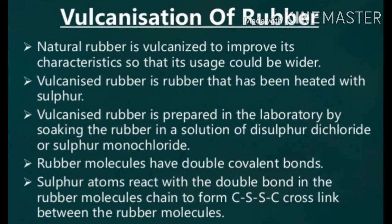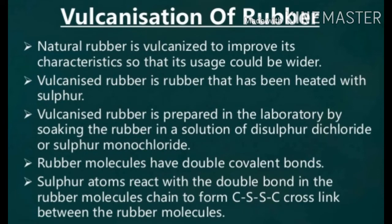Vulcanized rubber is rubber that has been heated with sulfur. Vulcanized rubber is prepared in the laboratory by soaking the rubber in a solution of disulfur dichloride and sulfur monochloride. We soak and dip the natural rubber into this solution in the laboratory.